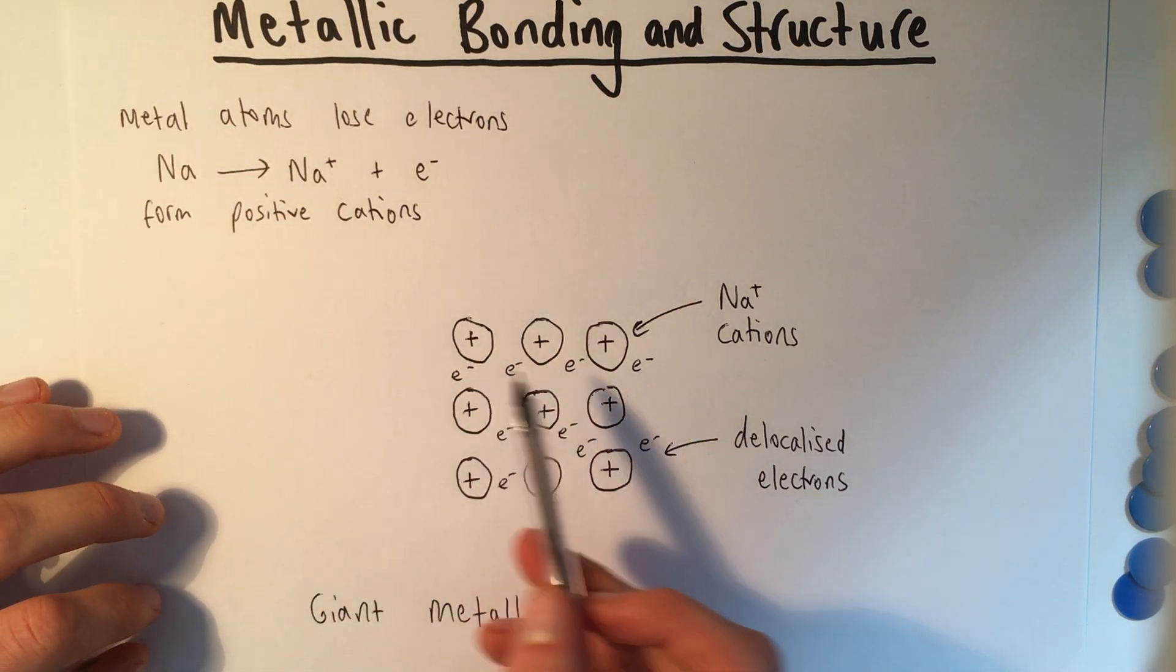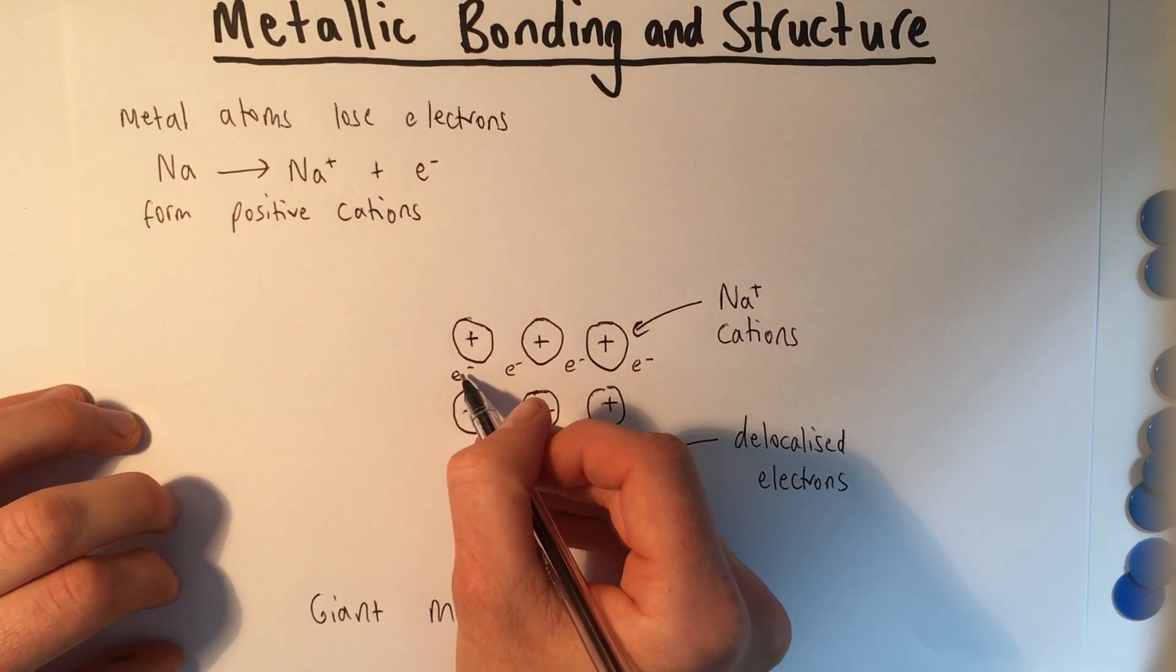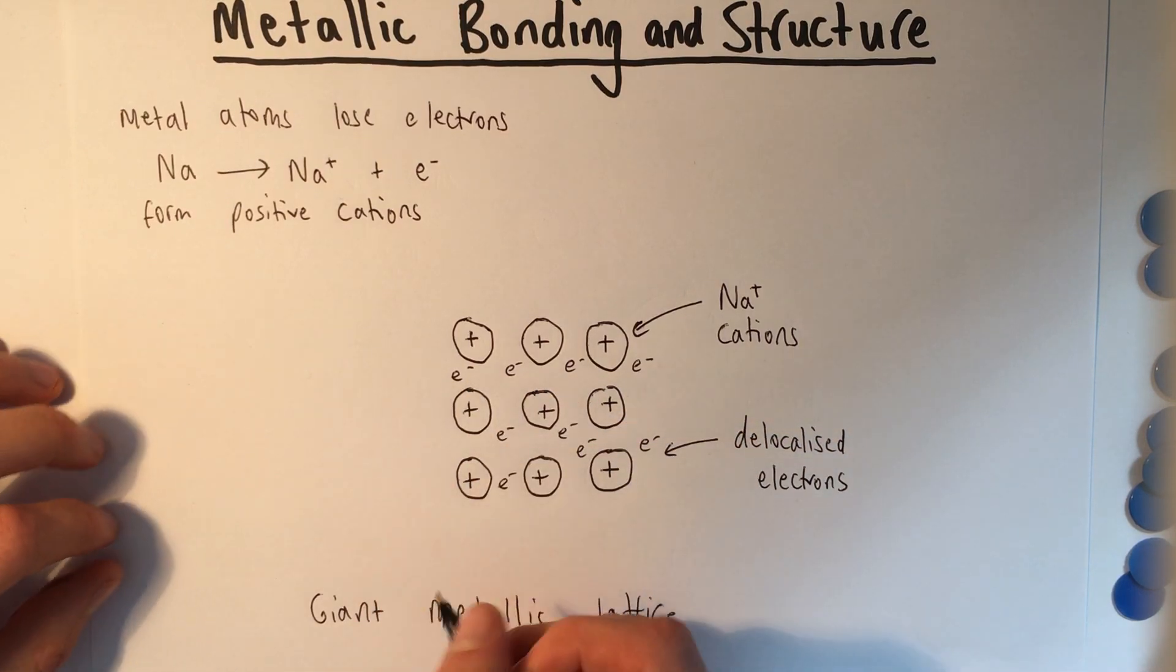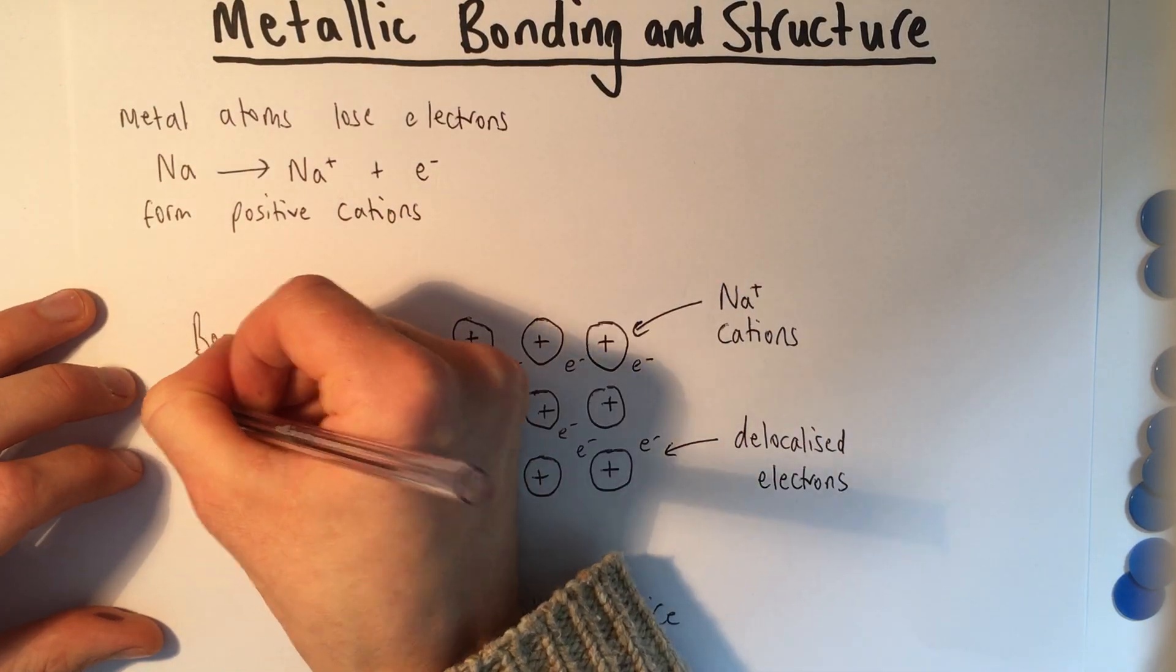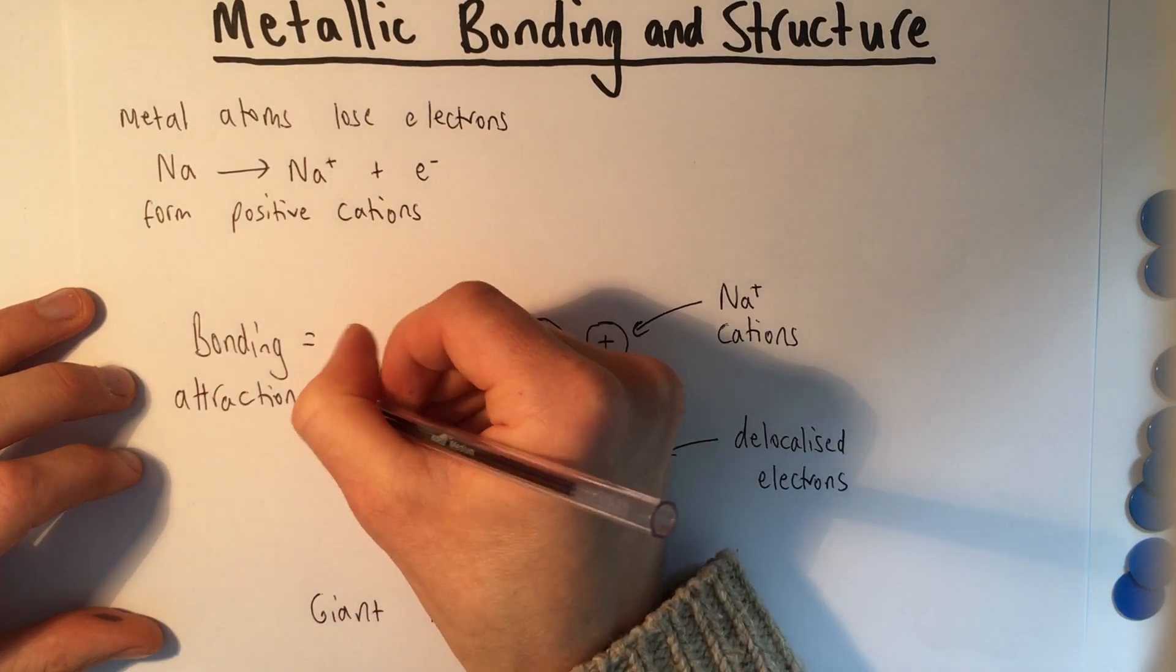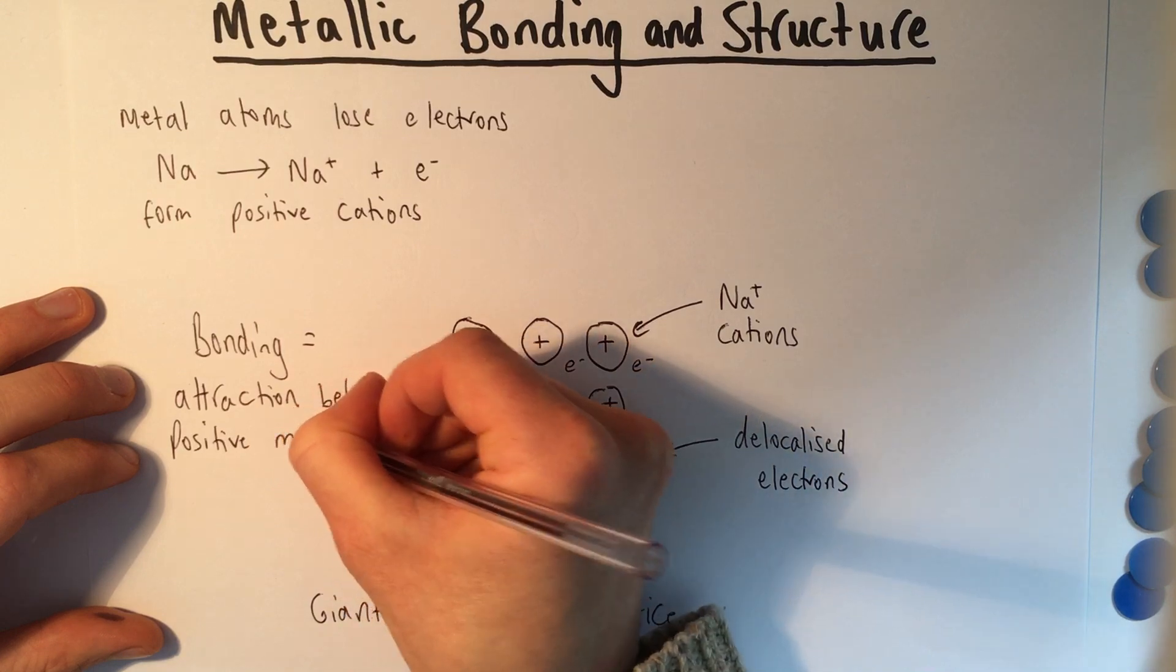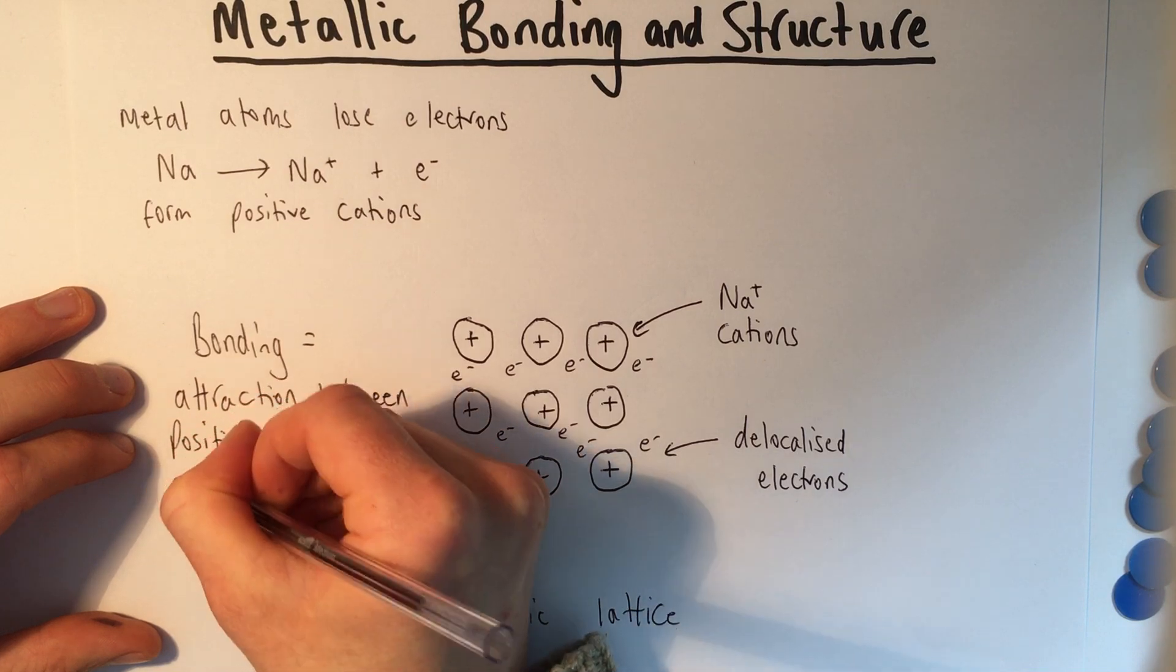What actually is the bonding? What's holding it together? Well, the fact that we've got these positive cations and these negative electrons means that we've got attraction between positive and negative. And that is what holds metals together. And it's quite a strong force. So the bonding is the attraction. And it's important that we're really specific with this. It's the attraction between positive metal cations and delocalized electrons.